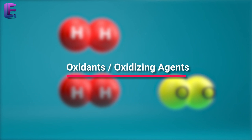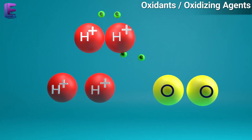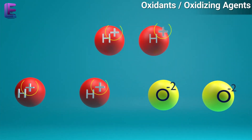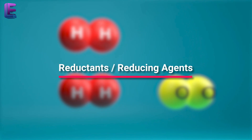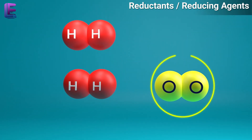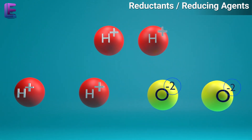Oxidants or oxidizing agents are reagents which can increase the oxidation number of an element in a given substance. Reductants or reducing agents are reagents which lower the oxidation number of an element in a given substance.